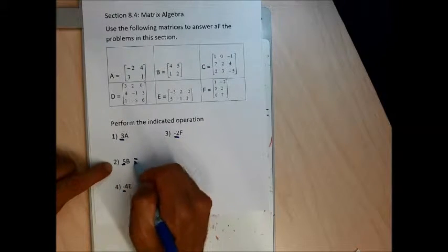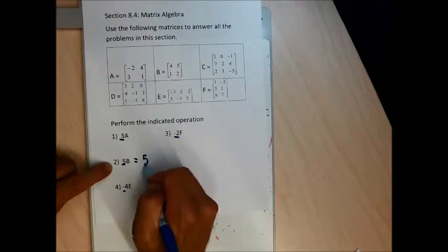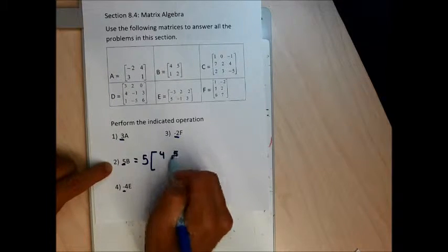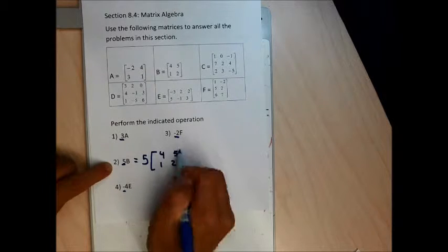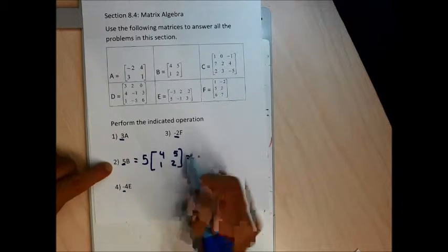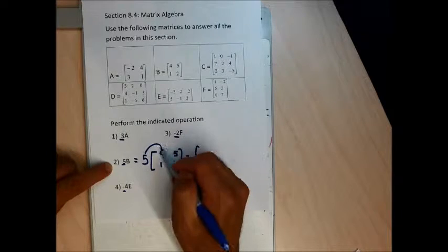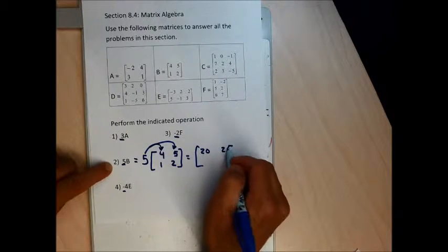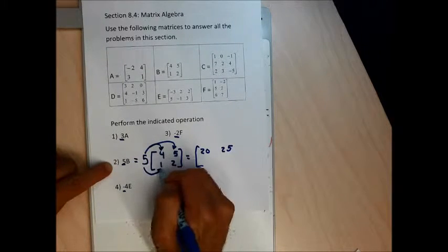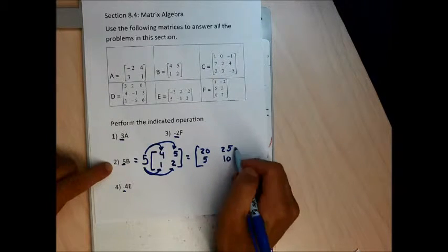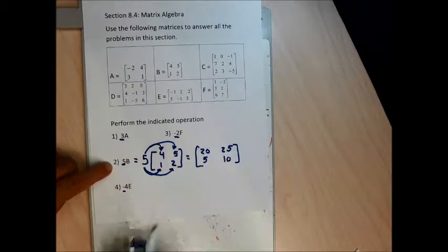This problem can be rewritten by replacing B with the matrix it's equal to: 4, 5, 1, 2. Then to do the scalar multiplication, I'm going to multiply every number by 5. So 5 times 4 is 20, 5 times 5 is 25, 5 times 1 is 5, and 5 times 2 is 10.